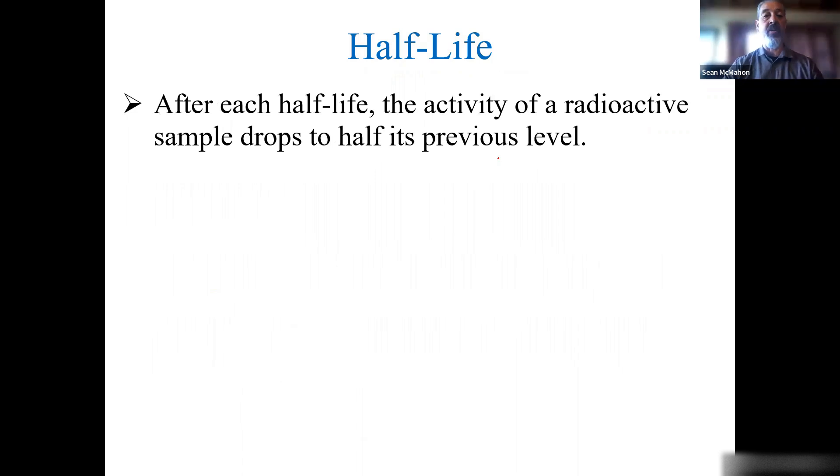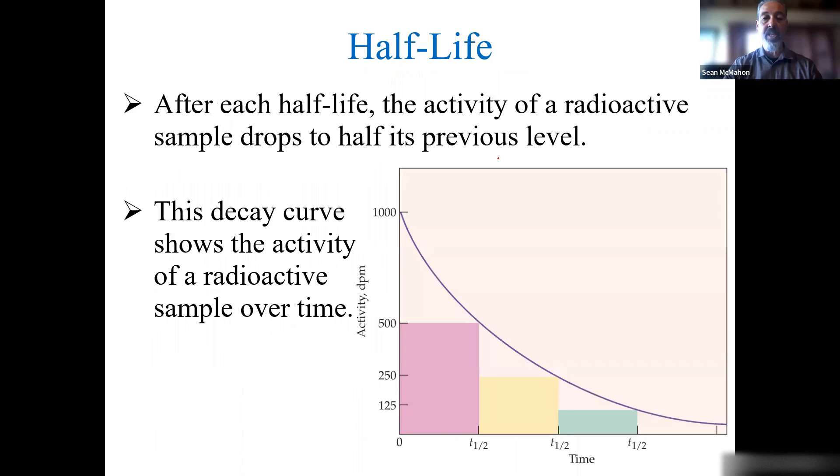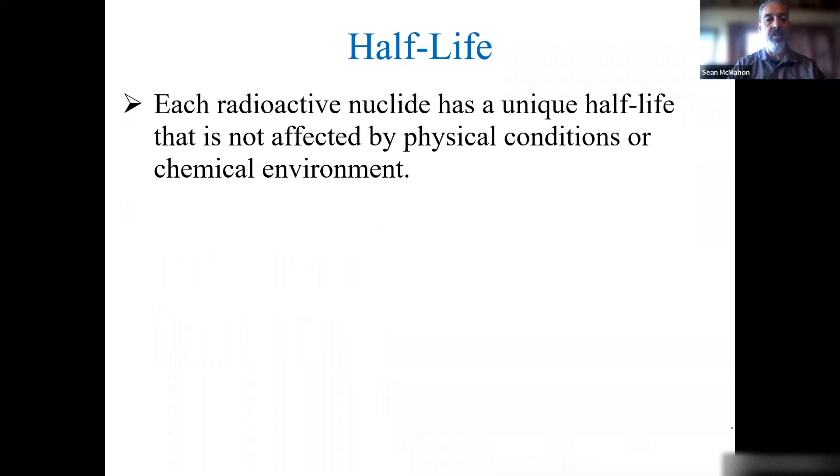That halving of the amount of disintegrations per minute is referred to as a half-life. After each half-life, the radioactive sample drops to half its previous level. We can see this in an exponential decay curve. Over time, it is exponentially decaying, not linear. With exponential decay, you reach what is called an asymptote, where you will never have no sample at all. It will always be half-half, and you will never truly cross zero. It can really be useful in determining how old objects are.